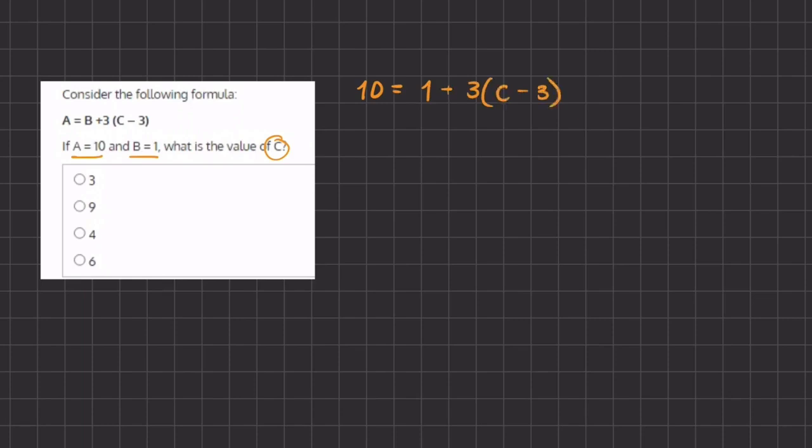All right, so now let's start simplifying. We have 10 equals 1 plus, now we can distribute this 3 into our parentheses. So we have 3 times c which gives us 3c and 3 times negative 3 which gives us negative 9.